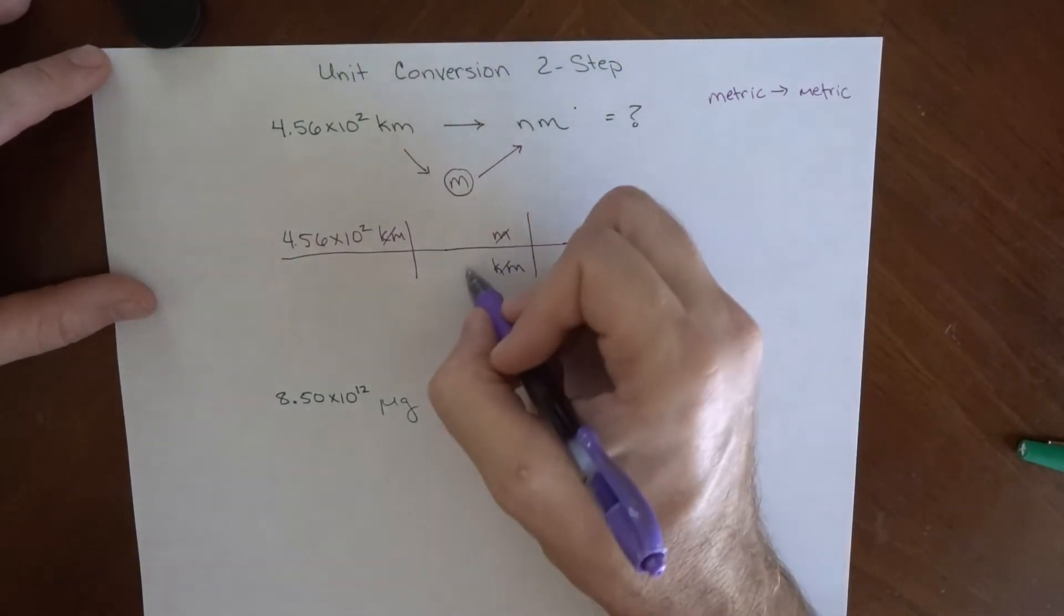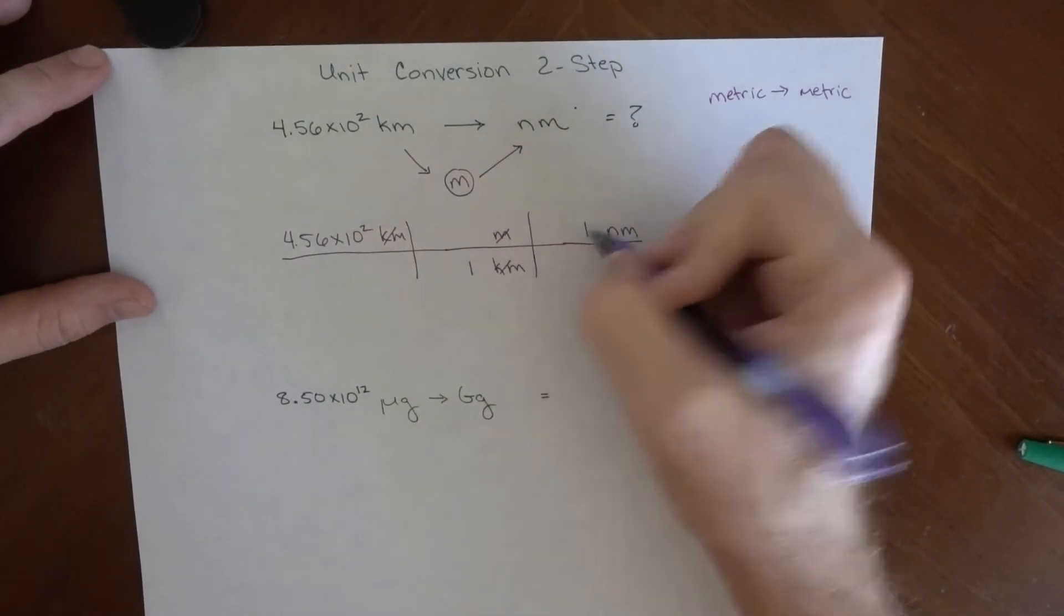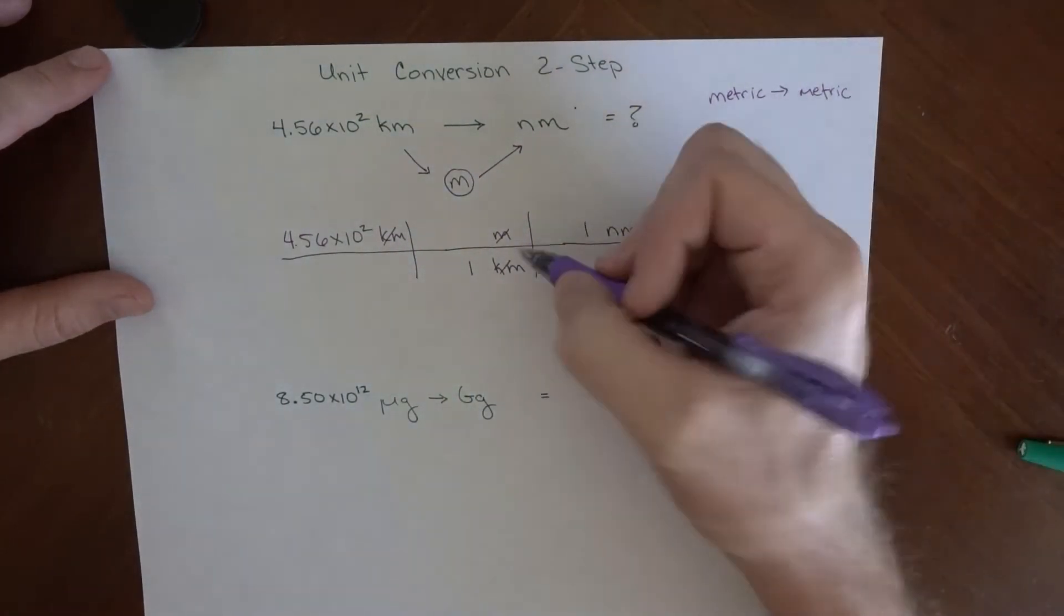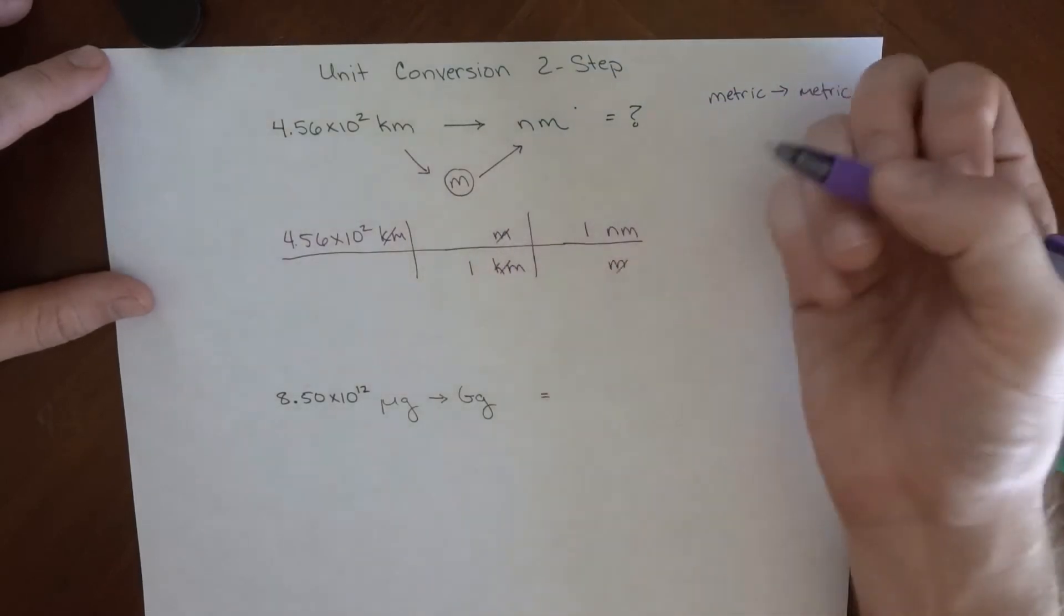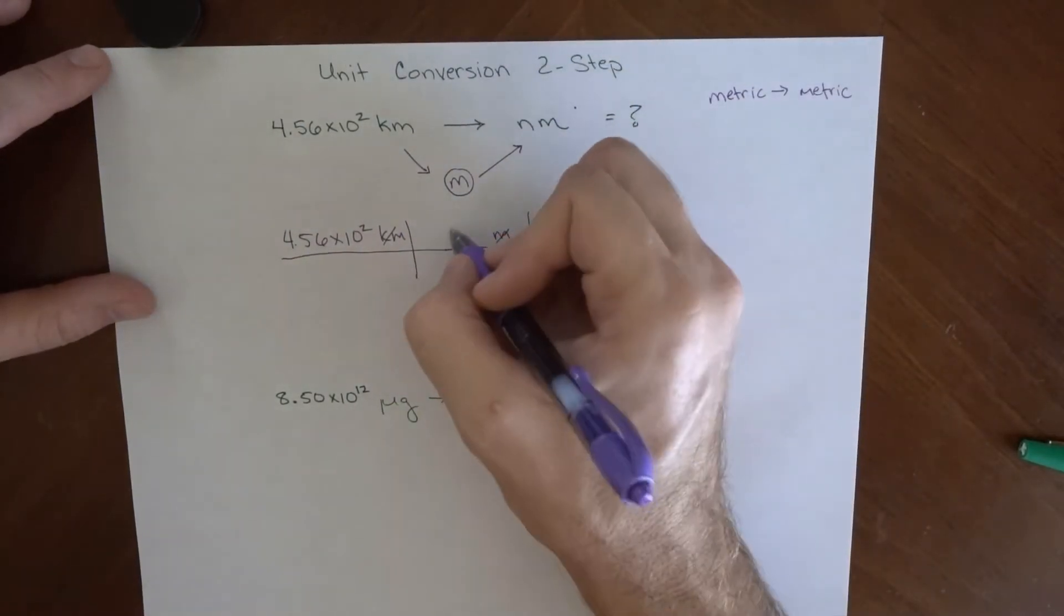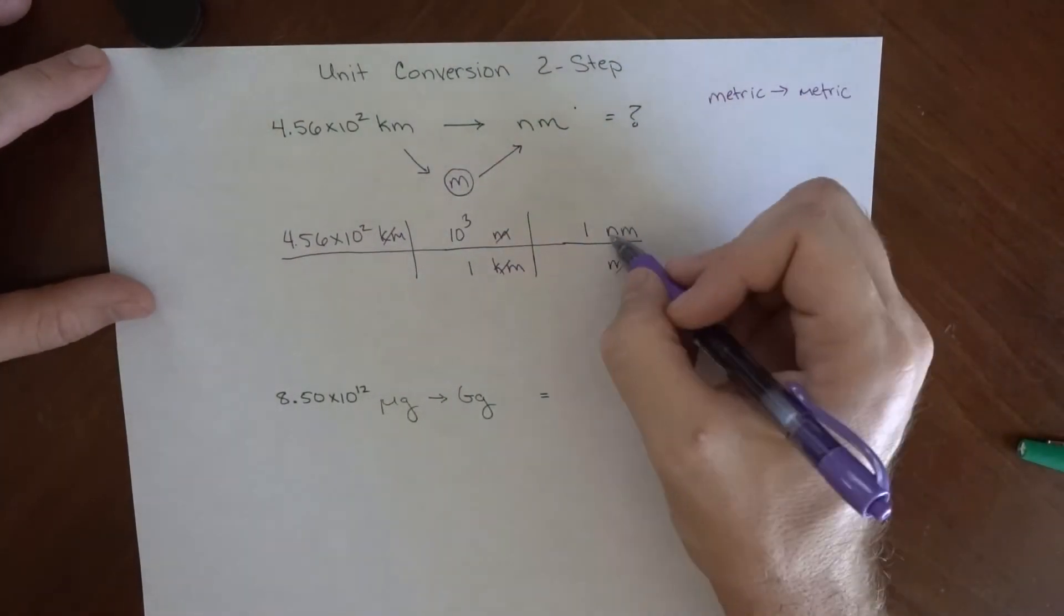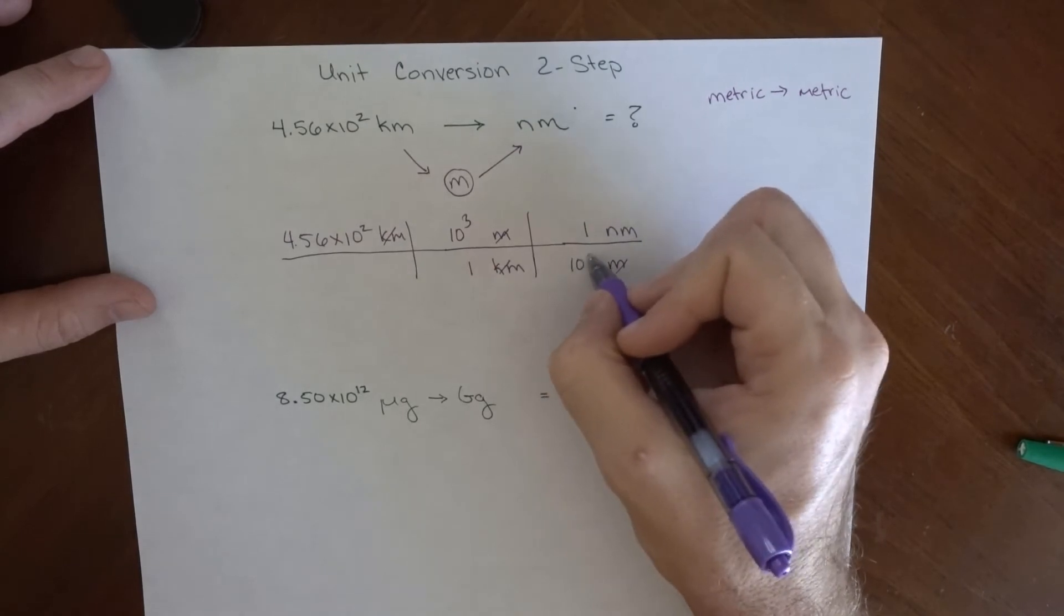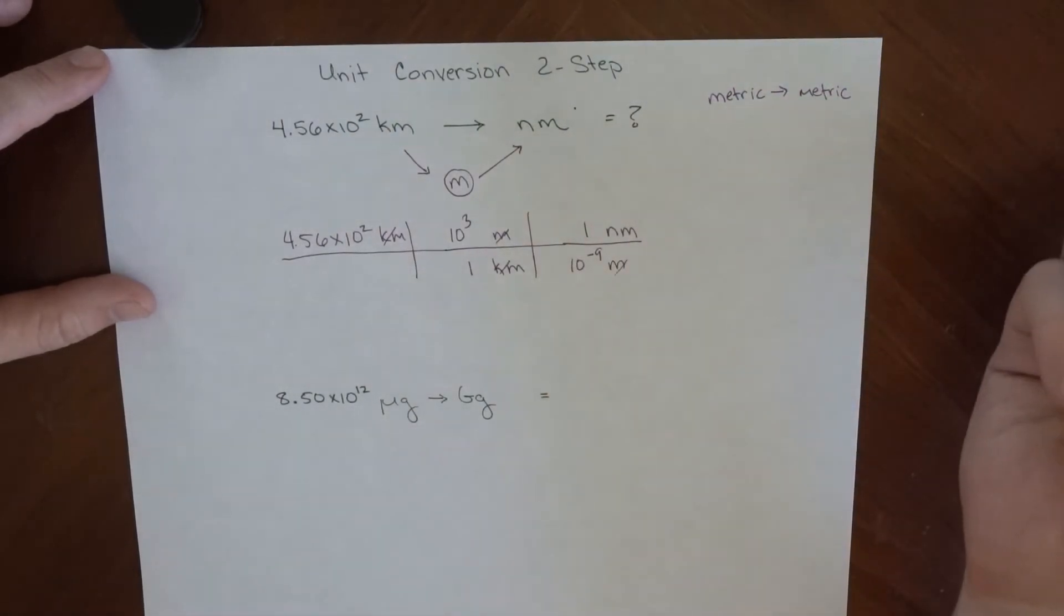Great. All I have to do now is put in the actual numbers here. So wherever I have a metric prefix, like here for kilometer and here for nanometer, ones go there. And what that metric prefix means goes in the other spot. So K means 10 to the 3, and nano means 10 to the minus 9.